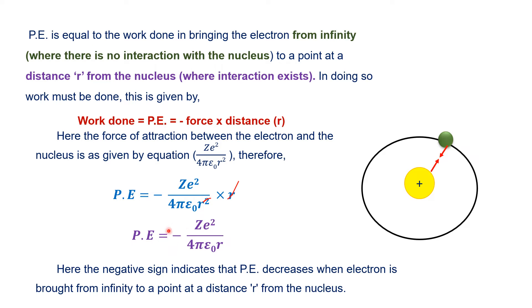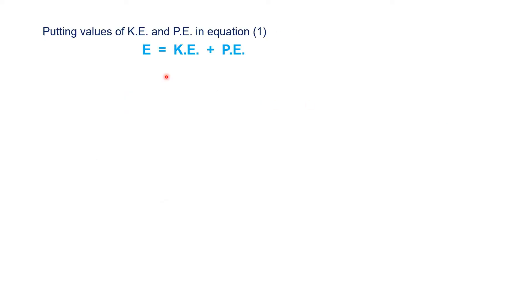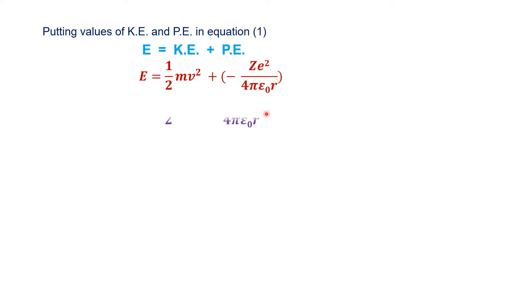The negative sign in this formula indicates that the potential energy decreases when the electron is brought from infinity to the point where there is an interaction between the nucleus and electron. Now putting the values of kinetic energy and potential energy into the total energy formula — kinetic energy plus potential energy — we get: half mv² plus (minus ze²/4πε₀r). The plus and minus result in minus, so the formula is: half mv² minus ze² divided by 4πε₀r.